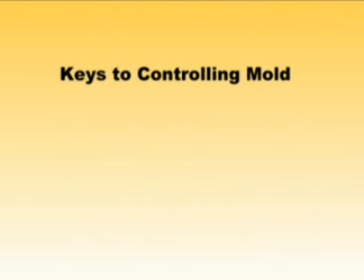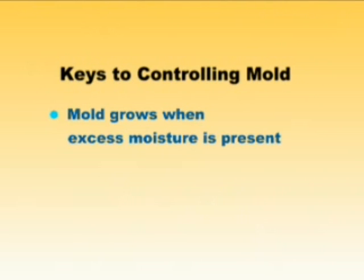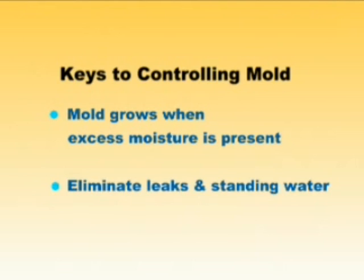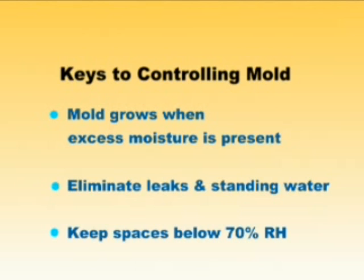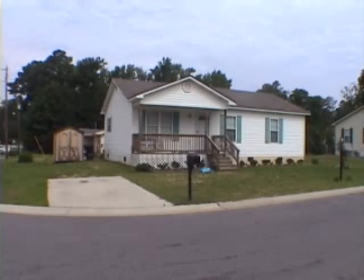Here are some keys to think about to control crawlspace mold. Mold will grow on wood and any other organic material when excess moisture is present. So what you need to do is eliminate water leaks and standing water, and particularly when it comes to crawlspaces, keep the crawlspace moisture levels below 70%.